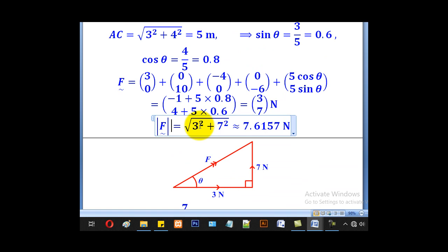Therefore, the magnitude will be √(3² + 7²), giving 7.6157 newtons. The horizontal is positive, vertical is positive. From start to end gives the resultant, and this will be your angle.